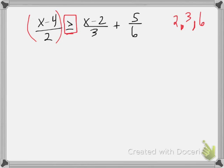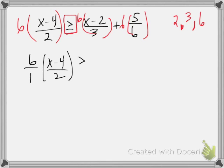And so, I'm going to multiply every single term by 6. What I'm going to do here is clean this up. We have 6 over 1 times x minus 4 over 2, greater than or equal to 6 over 1, x minus 2 over 3, plus 6 over 1, 5 over 6.